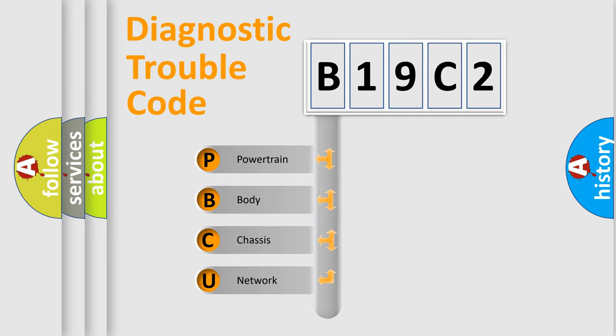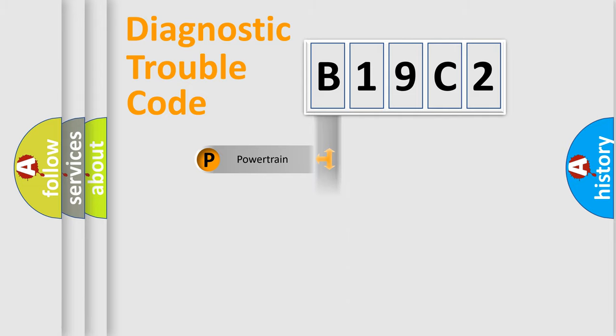We divide the electric system of automobiles into four basic units: powertrain, body, chassis, and network. This distribution is defined in the first character code.